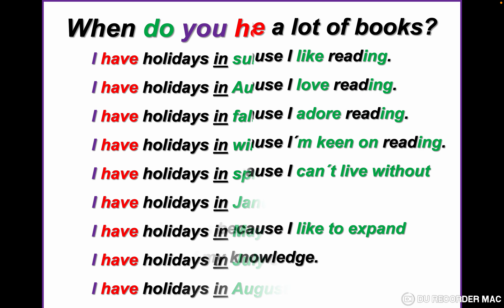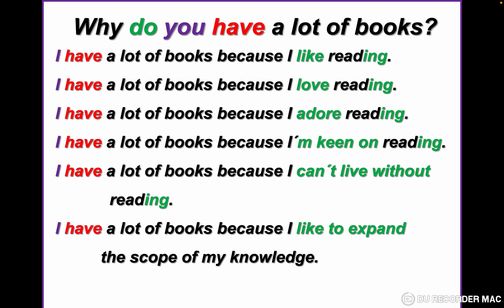Now we change the WH word to 'why.' Why do you have a lot of books? Let's see some possible answers. I have a lot of books because I like reading. I have a lot of books because I love reading. I have a lot of books because I adore reading. I have a lot of books because I am keen on reading — 'keen on' means I love.